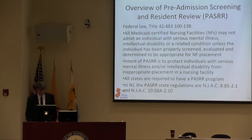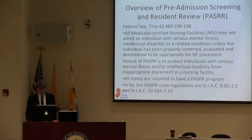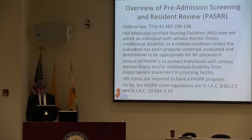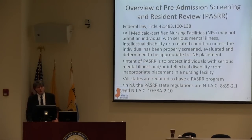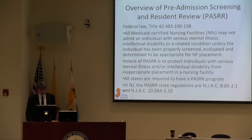OBRA '87 was a major law that reformed nursing home care quality, including reduced restraint use, reduced use of chemical restraints and psychiatric medications, and it also brought on the PASR process. Before this, a number of individuals in nursing homes had serious mental illness or intellectual and developmental disability, and their needs were not being met in those facilities.